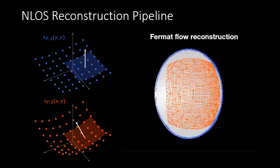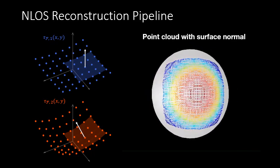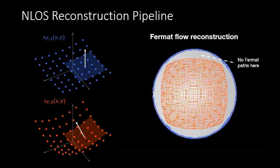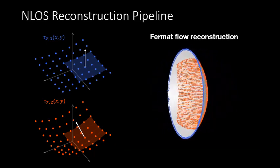This reconstruction pipeline can be used anytime we have transient measurements, regardless of the kind of transient imaging technology. To demonstrate this, we show non-line-of-sight reconstructions we obtained using measurements from two very different transient imaging systems.